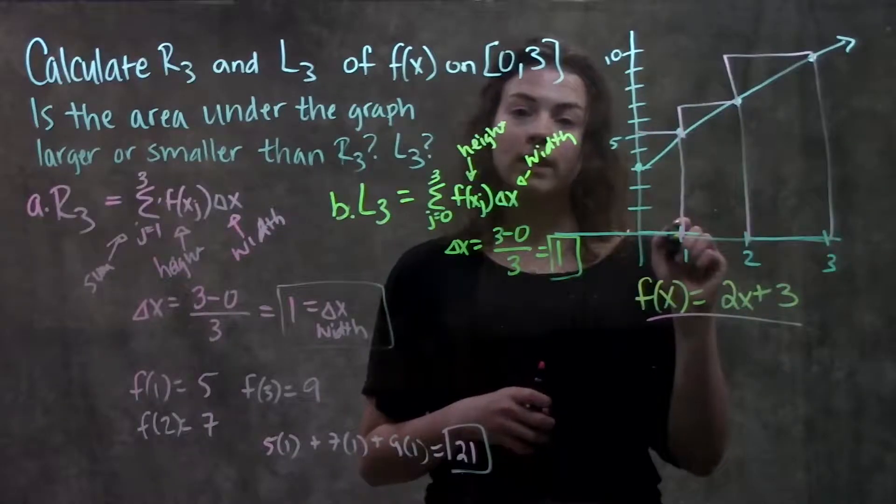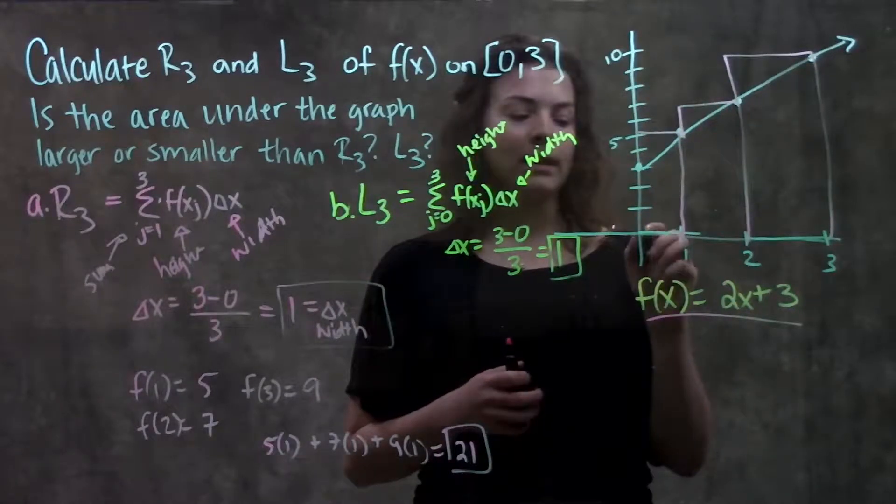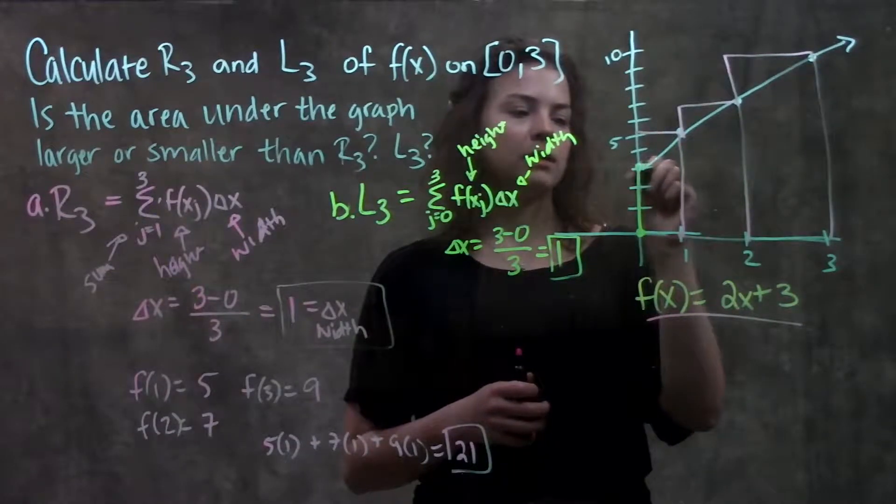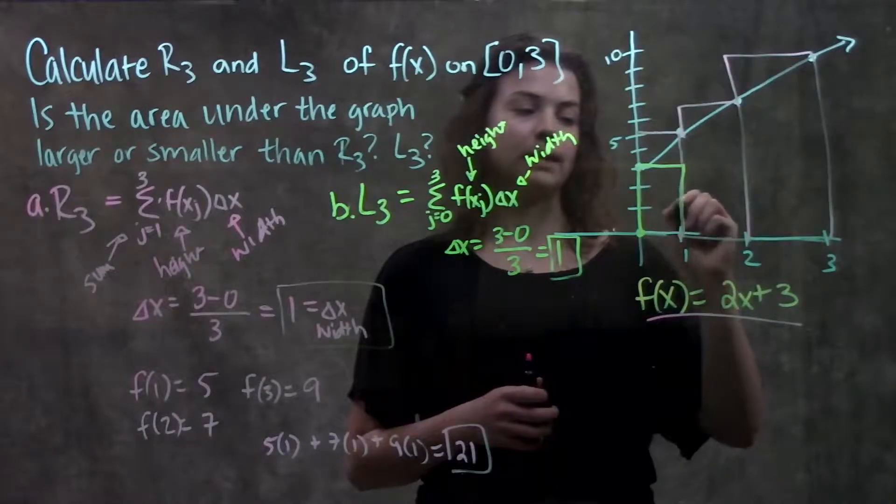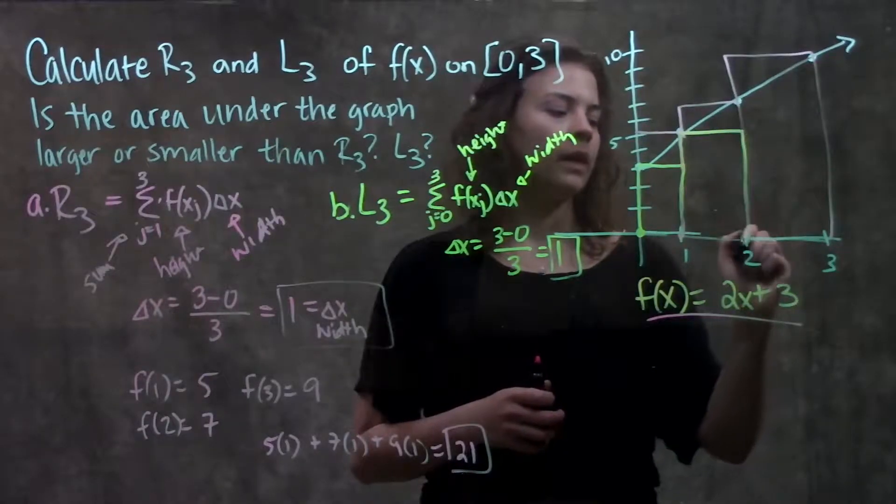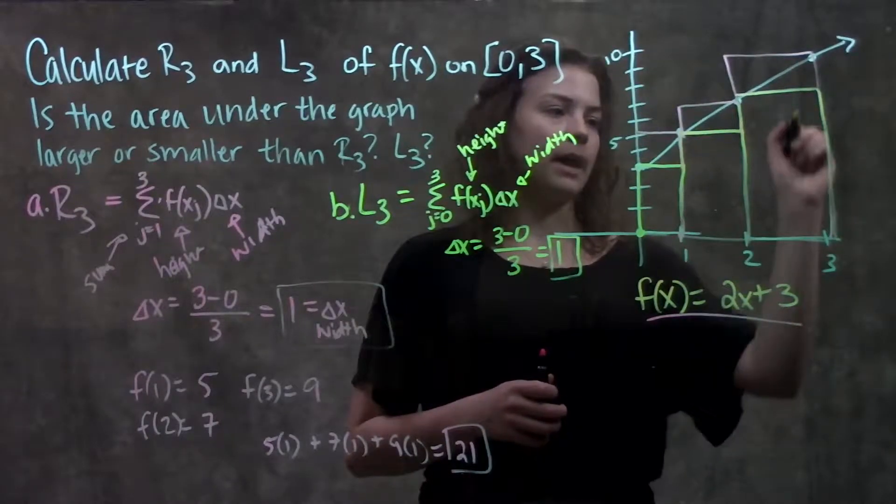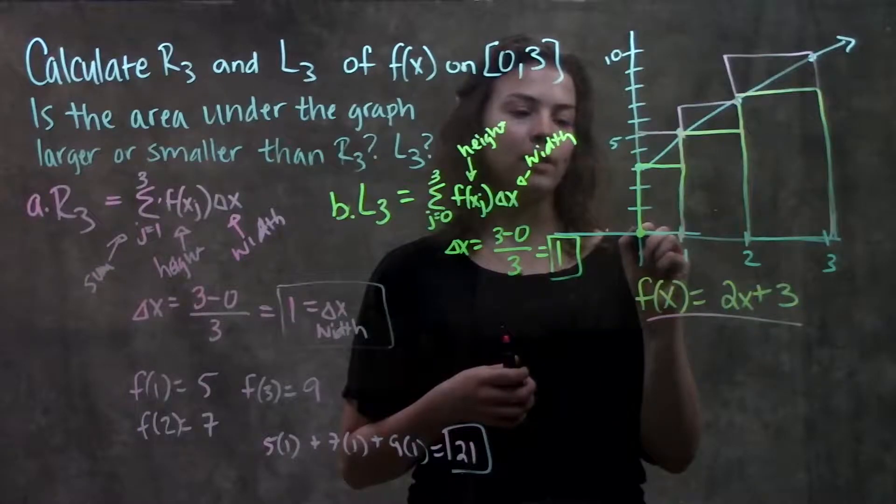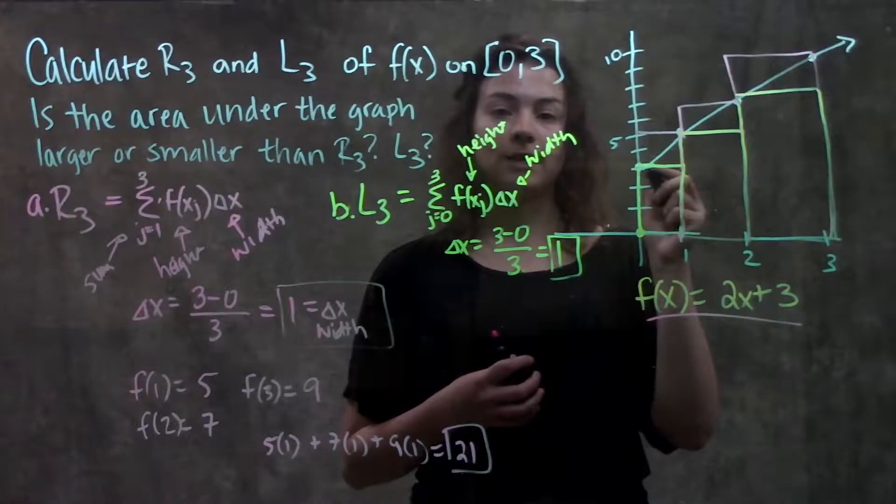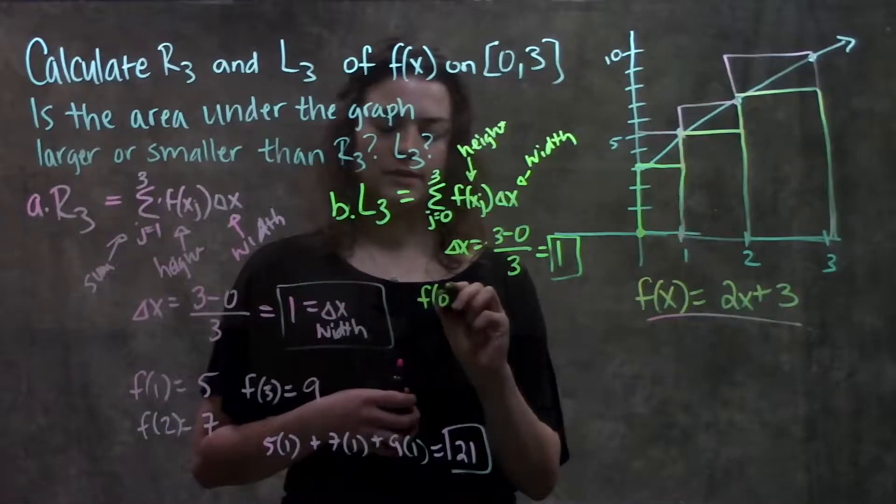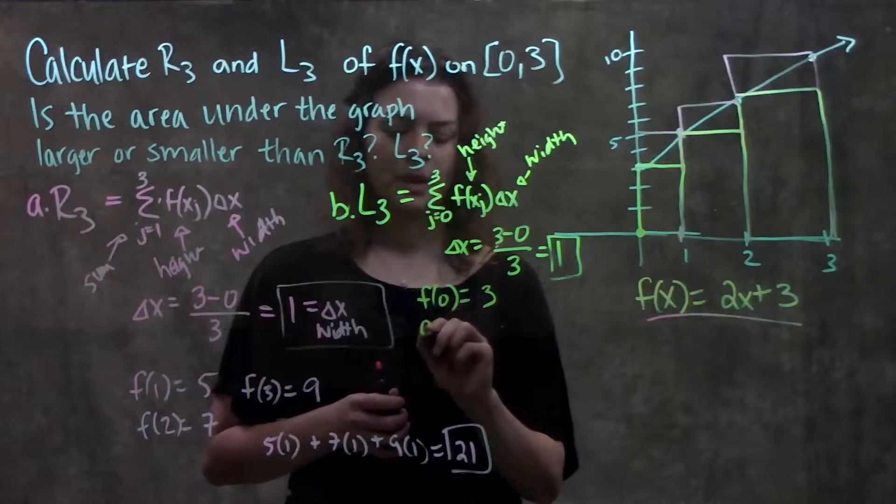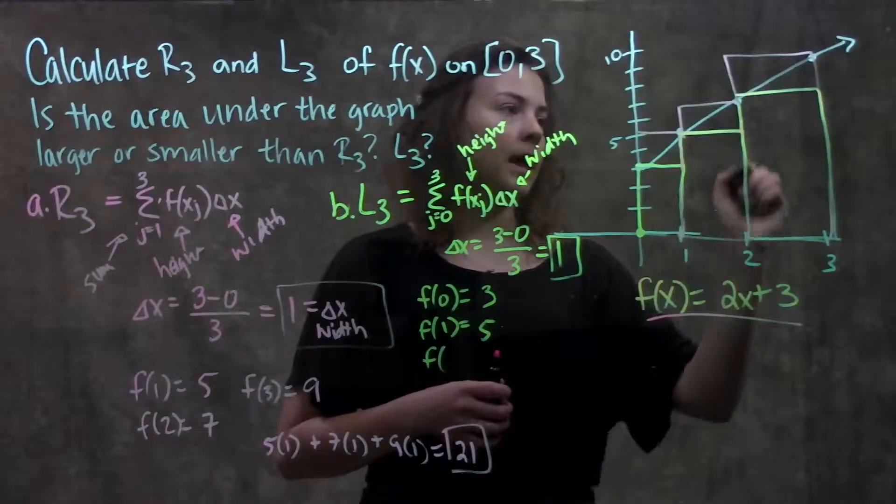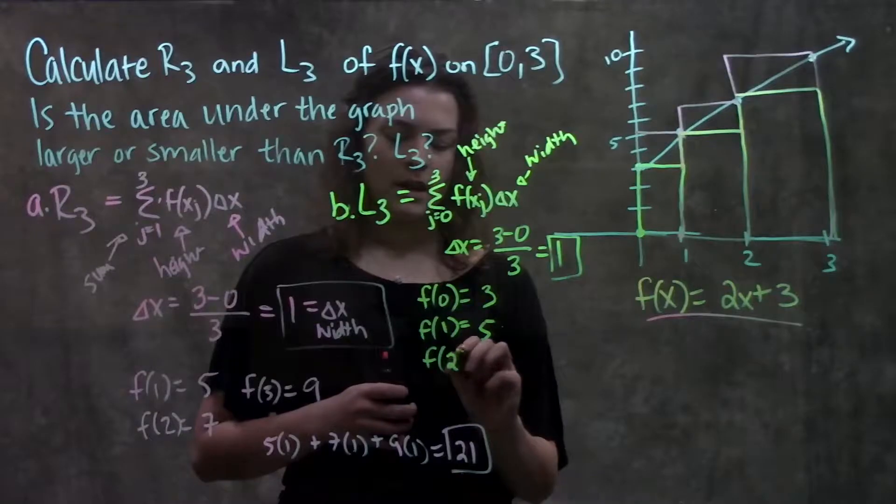Whereas with the right endpoint I had to move over 1 to draw my first rectangle, left endpoint means that you start at wherever this starting interval is. So I'm going to stay at 0, move up to my function and move over 1. Here's my first rectangle. Do that again, move up to the function, move over. And third time, that's my third rectangle. Same thing to find my f(x sub j). I just look at where all my endpoints are and look at what the value of the function is at that x value. So my first one is f(0), plug in 0 and you get 3. My next one is f(1), which we already calculated is 5. And my last rectangle is f(2), which again we already calculated is 7.